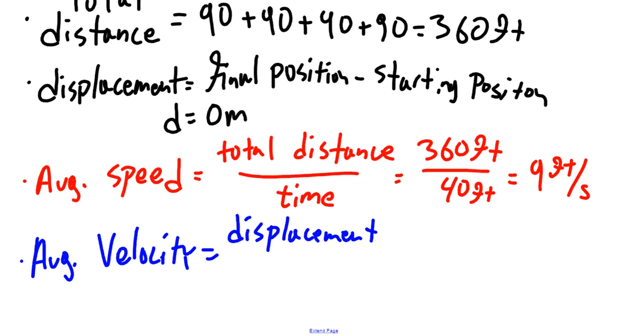So for this problem, we had a displacement of 0 meters and a time of 40 seconds. And so doing the calculation, 0 divided by 40, we get an average velocity of 0 feet per second.